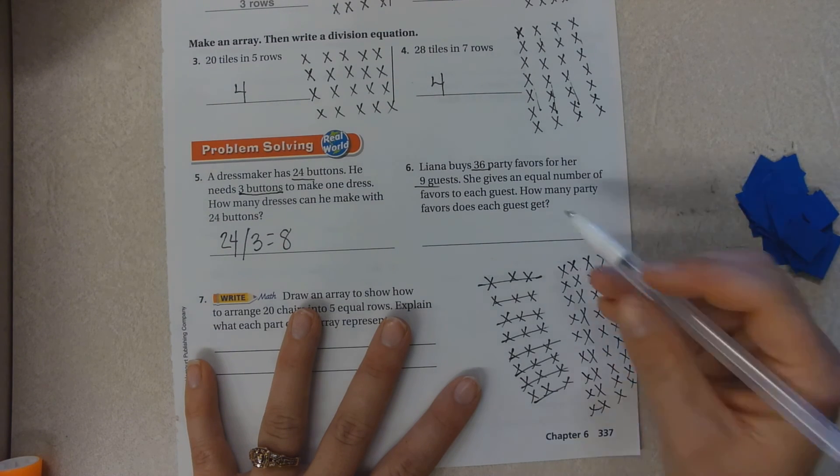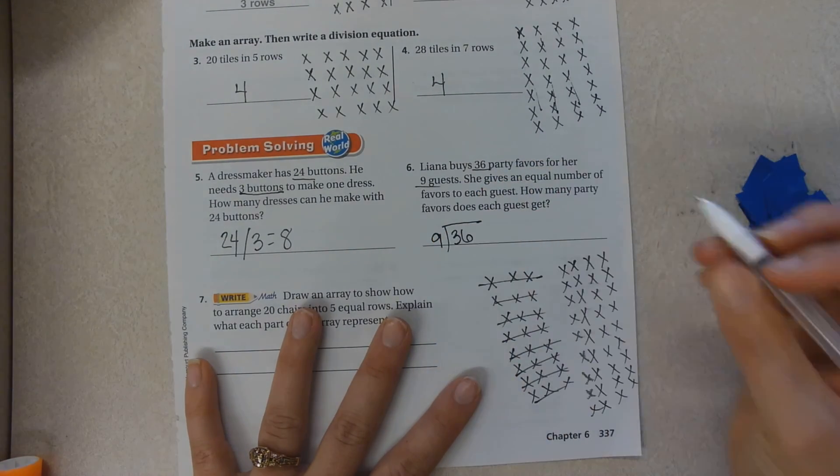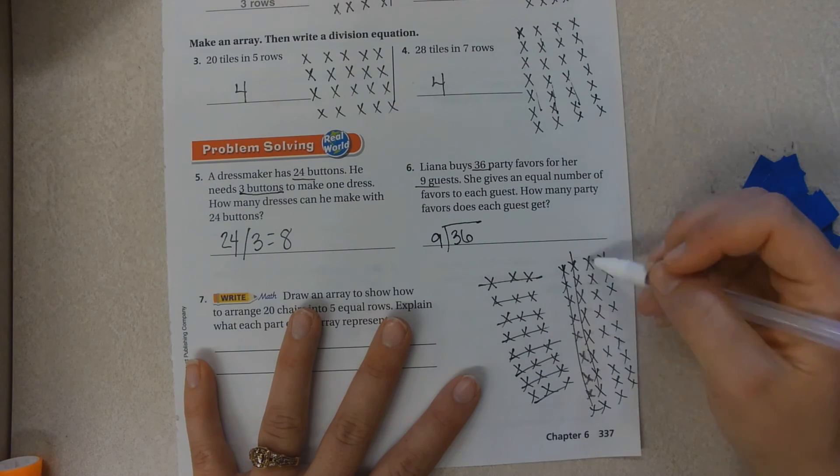So I've made it. Thirty-six divided by nine equals one, two, three, four.